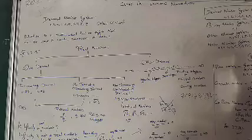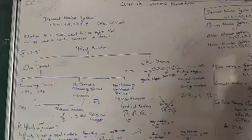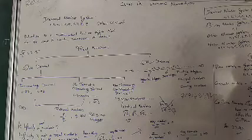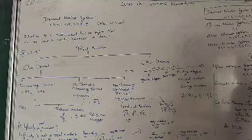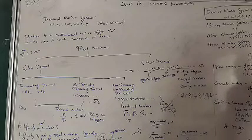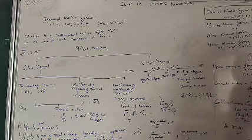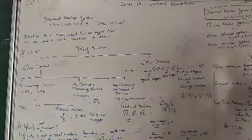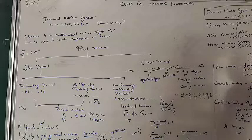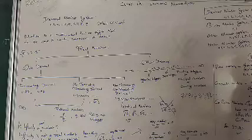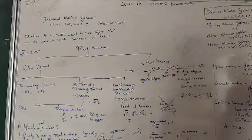Composite numbers are numbers greater than 1 that are not prime numbers — all numbers other than prime numbers are composite numbers. Examples: 4, 6, 8, 9, 10, and so on. In other words, they have more than two factors.